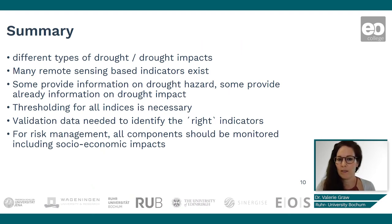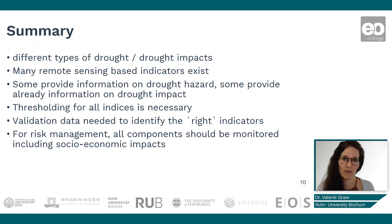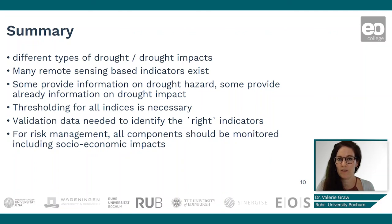In summary: there are different types of drought and drought impacts. Many remote sensing-based indicators exist, but choosing the right one is not simple — some are more complex to calculate, some provide information on drought hazard, and some on drought impact. Thresholding for all indices is necessary, and validation data is needed to identify the right indicator and the right threshold, as thresholds can vary between regions. For risk management, all components should be monitored including the socioeconomic impact — identifying who is affected by decreasing yields or who depends on rain-fed agriculture.